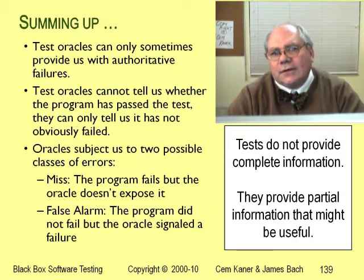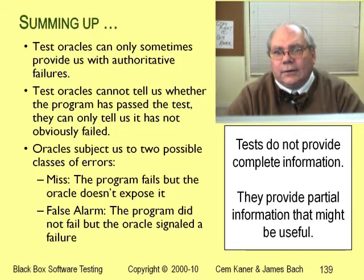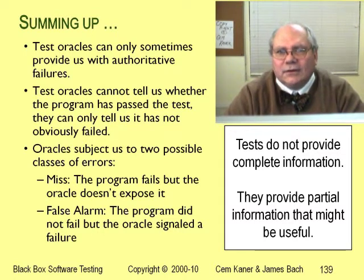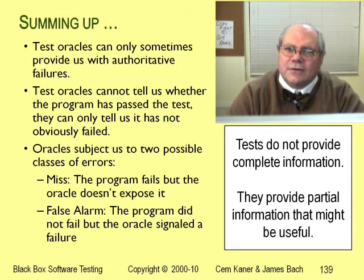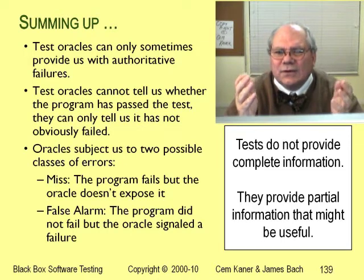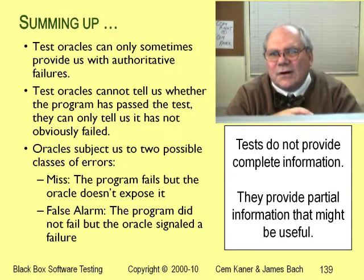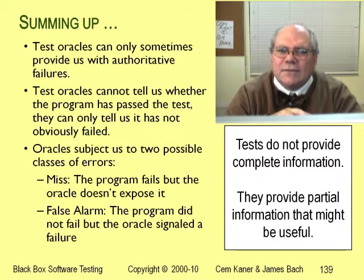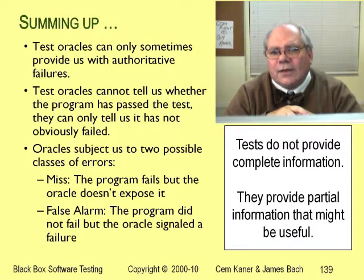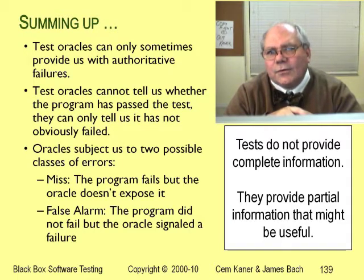Let's sum up on the oracles. Sometimes a program behaves in a way that is obviously wrong, and if we can notice and recognize the error, we can report it without spending much time thinking about it. But other times the failure is harder to spot, harder to recognize, or harder to explain. If we think of oracles as hard and fast rules, we'll miss a lot of these harder problems. Treating oracles as heuristics gives us more freedom to think about partial answers — results that are suspicious or unlikely rather than necessarily wrong — and helps us think about design choices that might be problematic even if they were put into the code intentionally.